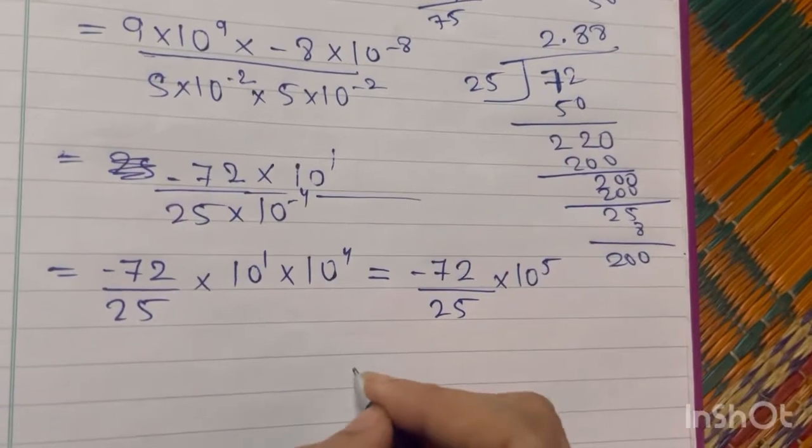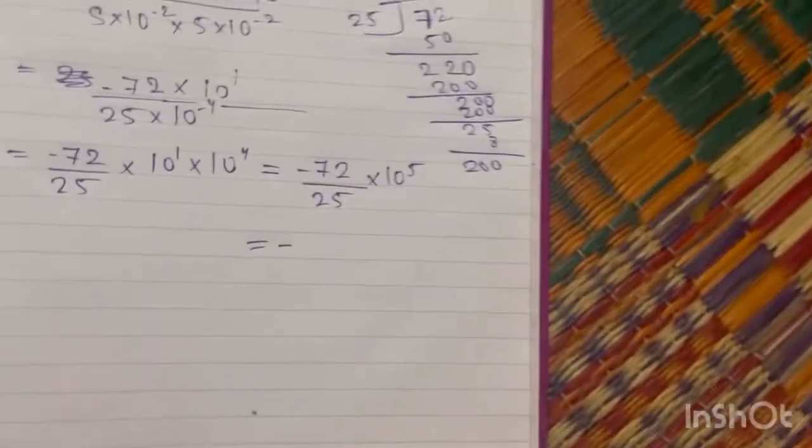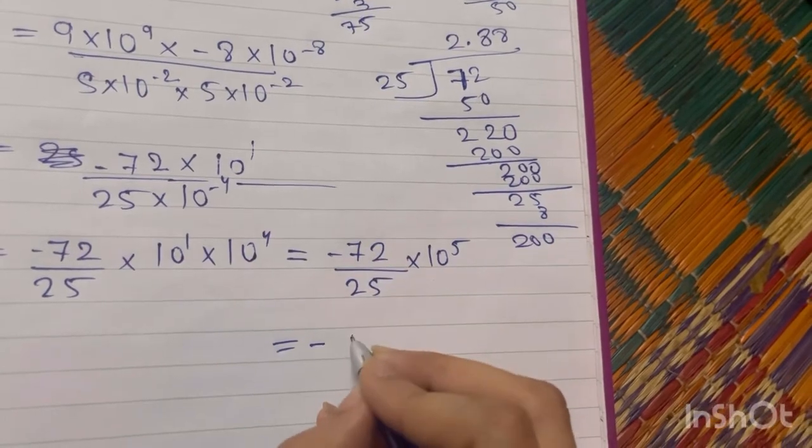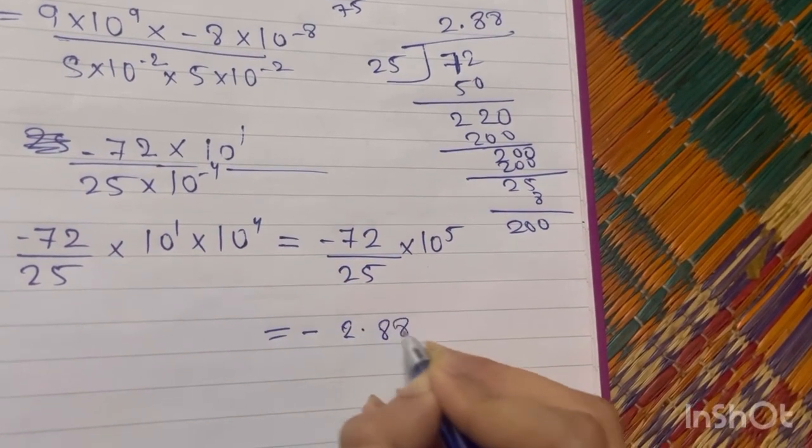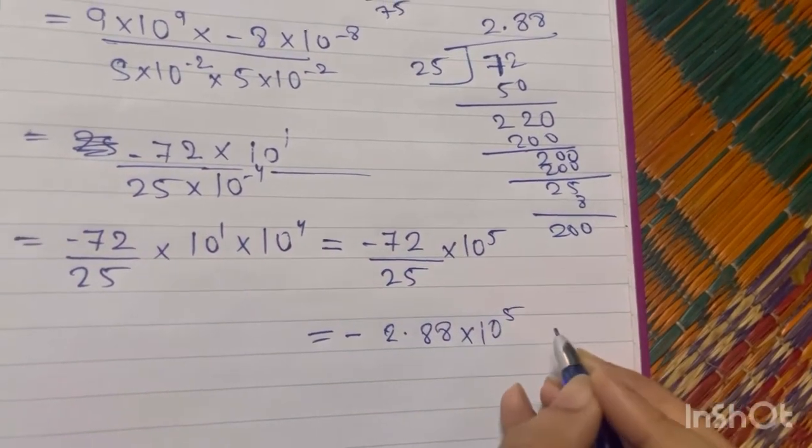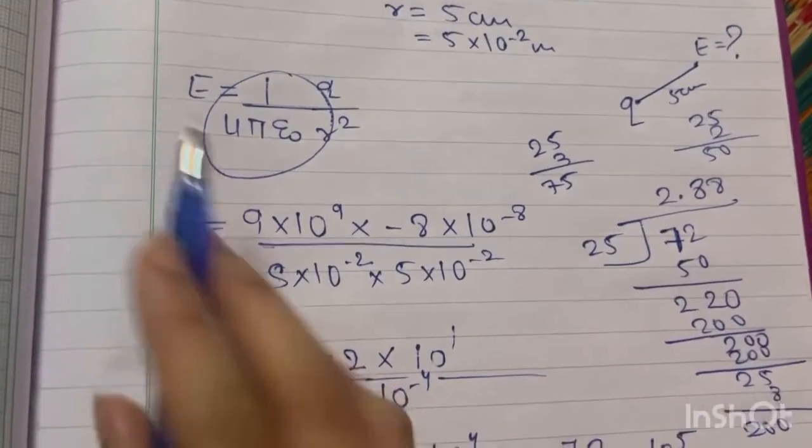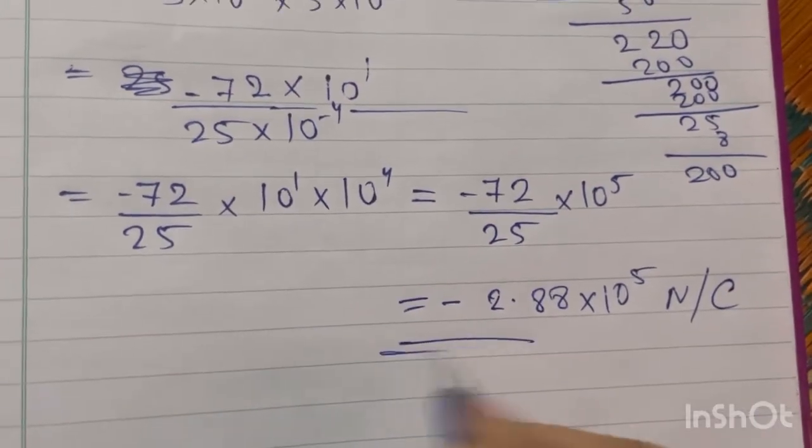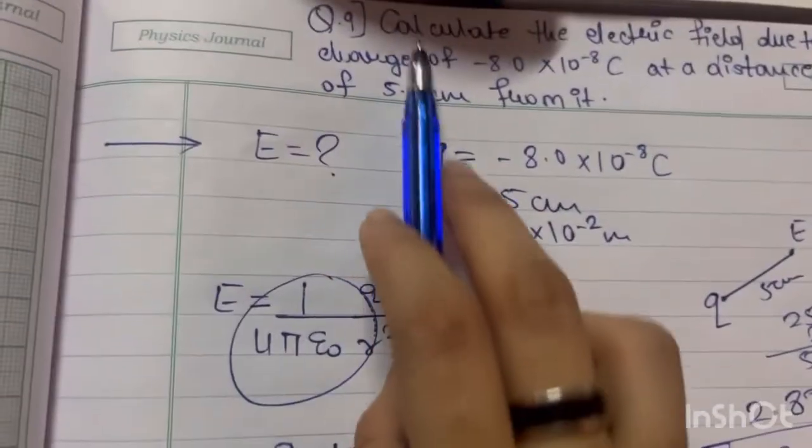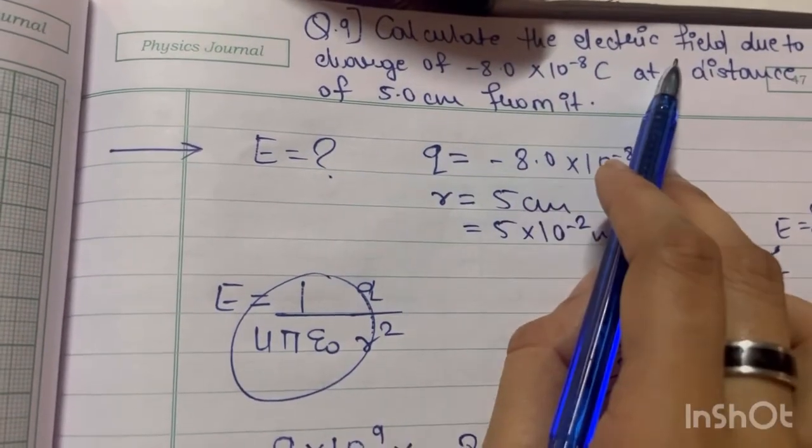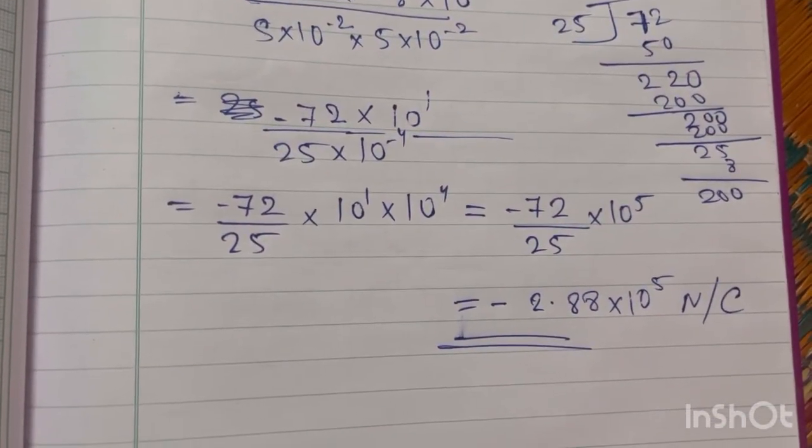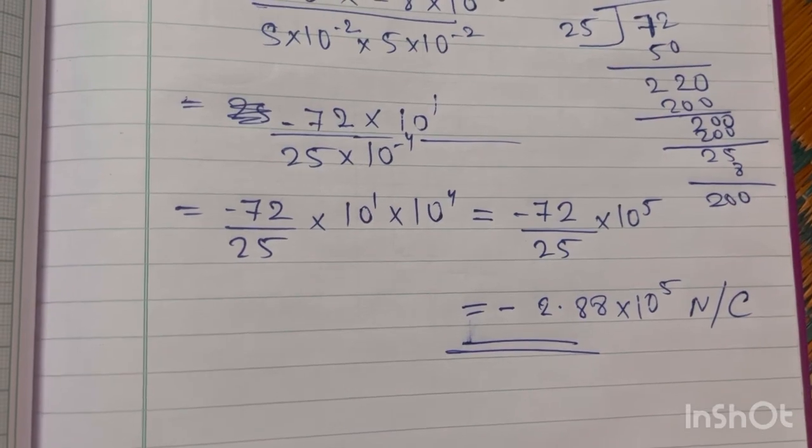So now the answer is minus 72 divided by 25 will give you 2.88 times 10 raised to 5. The unit for electric field is Newton per Coulomb. So this is the value of the electric field: minus 2.88 times 10 raised to 5. The answer given in the textbook is wrong.